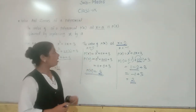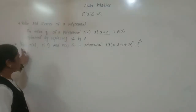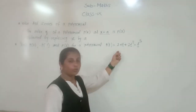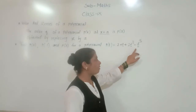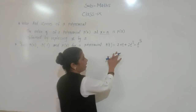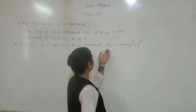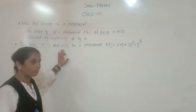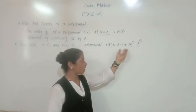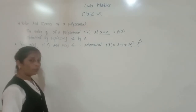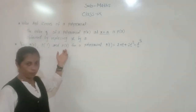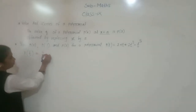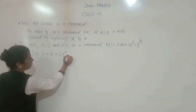Now we will see more examples on the value of a polynomial. We will find P of 0, P of 1, and P of 2 for the polynomial P of T equals to 2 plus T plus 2T squared minus T cubed. We can take many polynomials to find their values. For this polynomial, we will find the value at P of 0, P of 1, and P of 2.